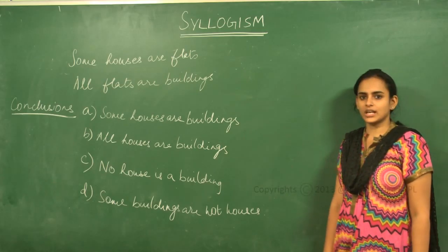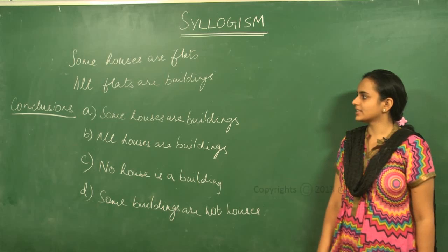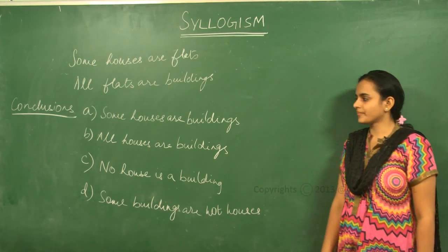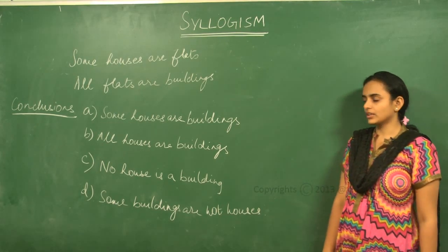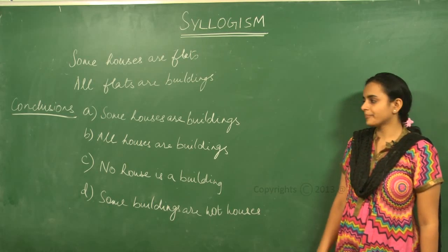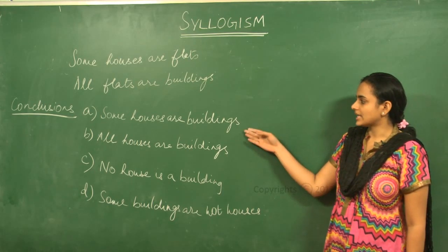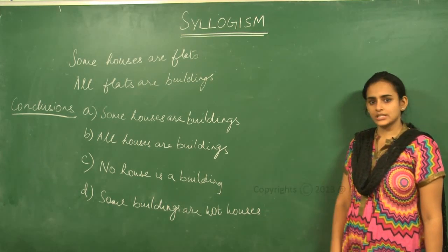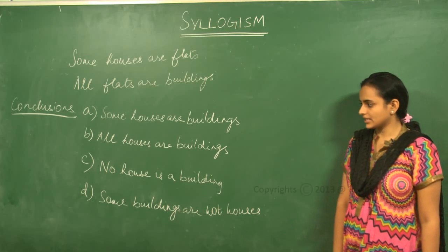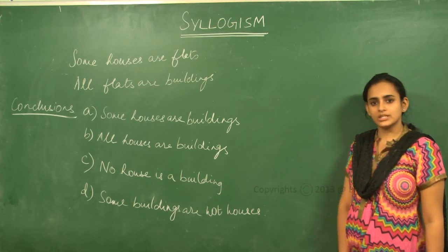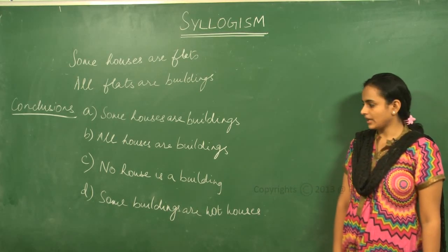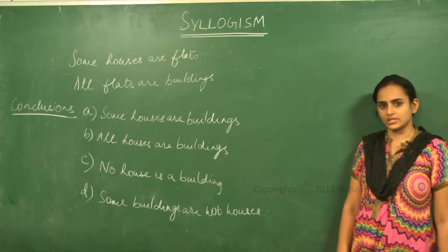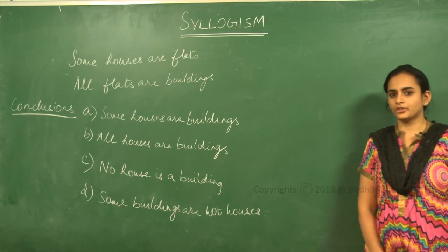Some houses are flat and all flats are buildings. The conclusion options are: some houses are buildings, all houses are buildings, no house is a building, and some buildings are not houses.